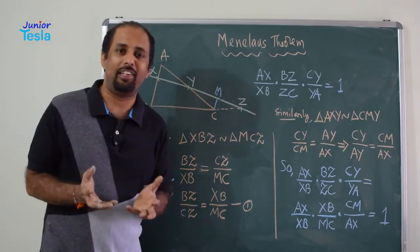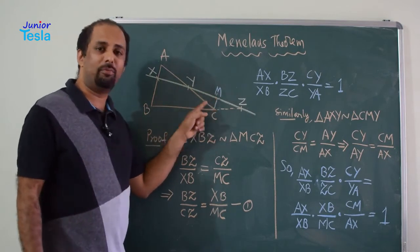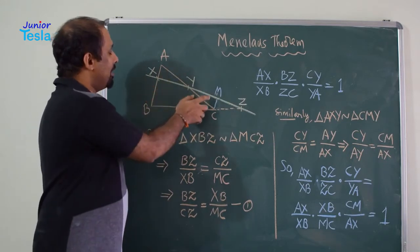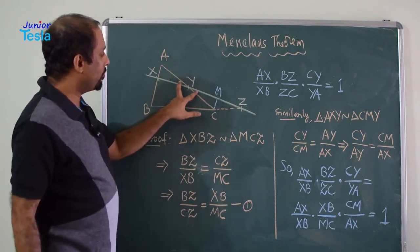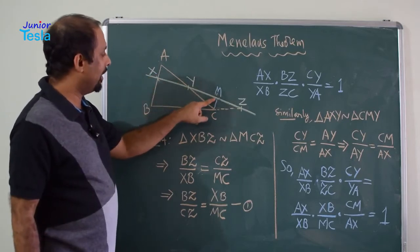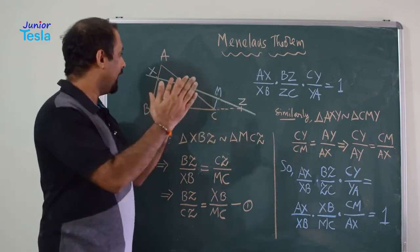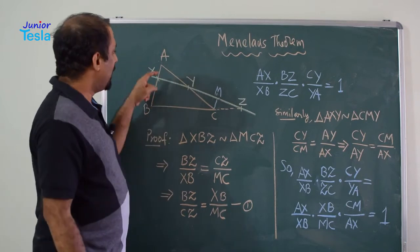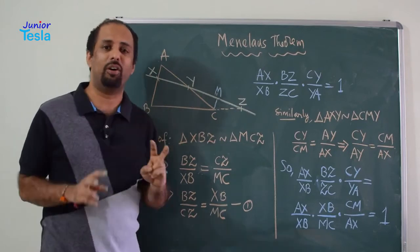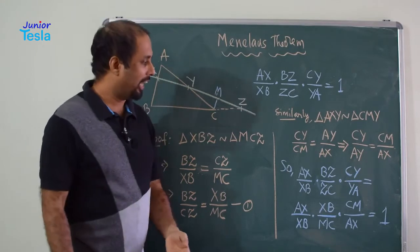Now, let us try to find another set of similar triangles. I have already drawn one small construction. MC is parallel to XB or AB. Now, these two triangles are also similar. Why? Because these two are correspondingly opposite angles which are equal. Now, this angle is equal to this angle and this angle is equal to this angle. Why? Because MC and AX, they are parallel to each other. So, triangle AXY and triangle CMY, these two are similar triangles. So, we got another set of similar triangles.